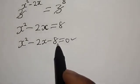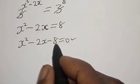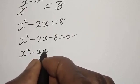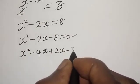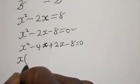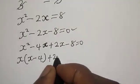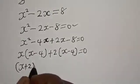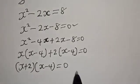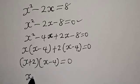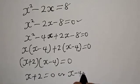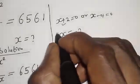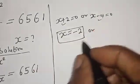Since they have the same base, the bases cancel and we have s squared minus 2s equals 8. Then we have s squared minus 2s minus 8 equals zero. This is a quadratic equation and can be solved by factorization. We factor to get s squared minus 4s plus 2s minus 8 equals zero, giving us s(s minus 4) plus 2(s minus 4) equals zero, so (s plus 2)(s minus 4) equals zero.